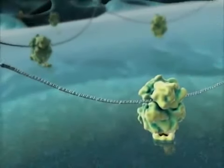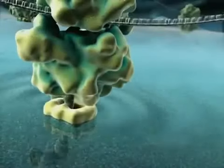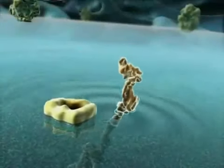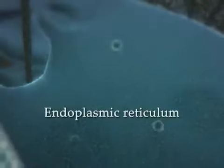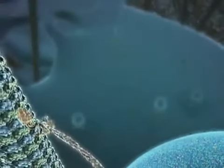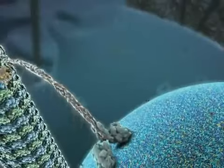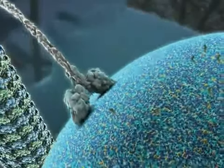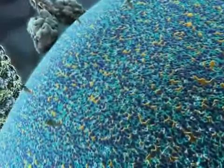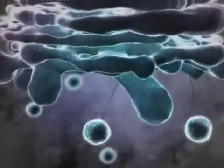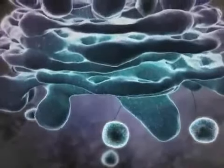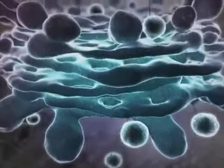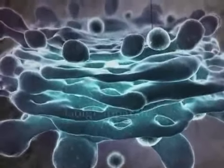Nascent proteins pass through an aqueous pore in the translocator. Cell-secreted proteins accumulate in the lumen of the endoplasmic reticulum, while integral membrane proteins become embedded in the endoplasmic reticulum membrane. Proteins are transported from the endoplasmic reticulum to the Golgi apparatus by vesicles traveling along the microtubules. Protein glycosylation, initiated in the endoplasmic reticulum, is completed inside the lumen of the Golgi apparatus.